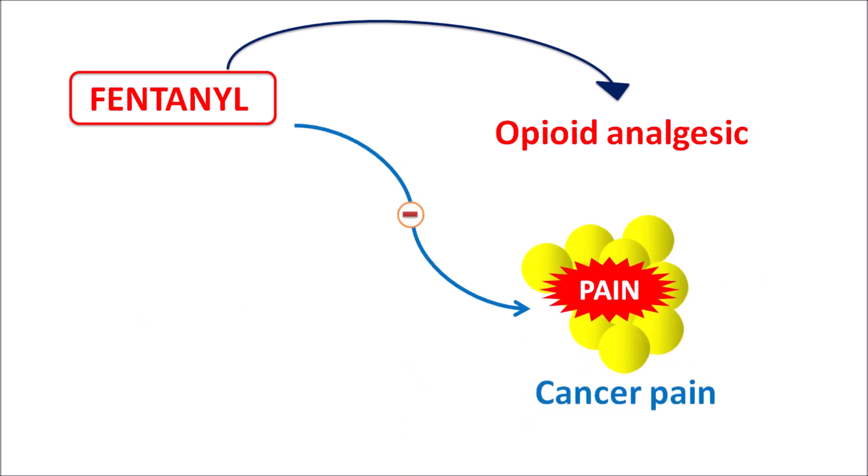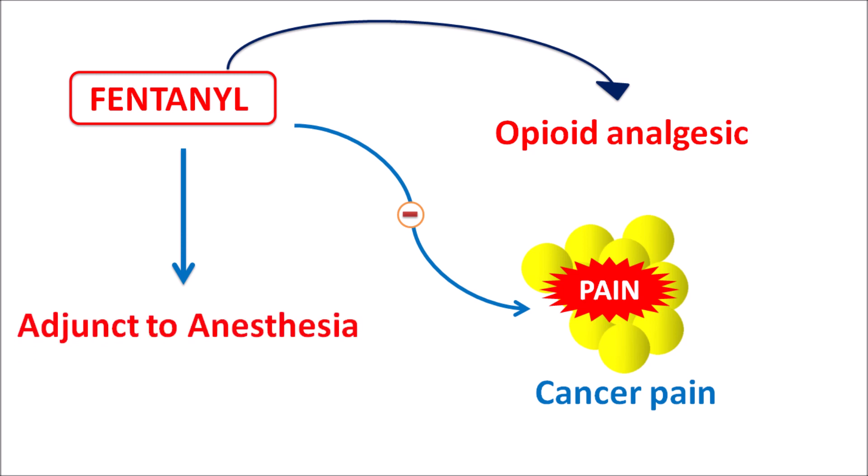Fentanyl can be used to control breakthrough cancer pain in patients along with other sedatives. It is also used as an adjunct to anesthesia, where pain transmission should be inhibited, so fentanyl can be used with IV anesthetics. It can also be combined with droperidol, a neuroleptic that reduces agitation and induces sedation, producing neuroleptic analgesia. This video covers fentanyl's mechanism of action, precautions, side effects, dosage forms, and chemical nature.